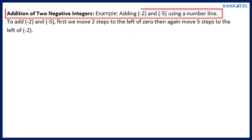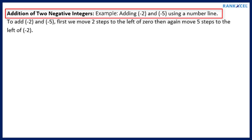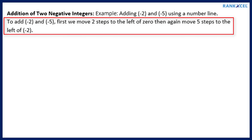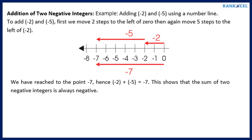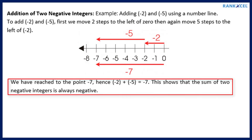Addition of 2 negative integers on a number line. Example: Adding minus 2 and minus 5. First we move 2 steps to the left of 0, then again move 5 steps to the left of minus 2. We have reached the point minus 7. Hence minus 2 plus minus 5 equals minus 7. This shows that the sum of 2 negative integers is always negative.